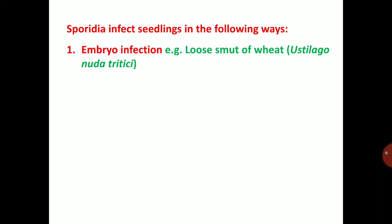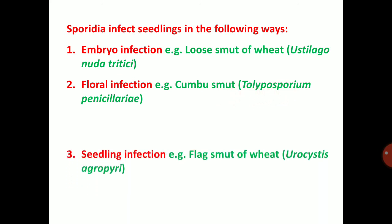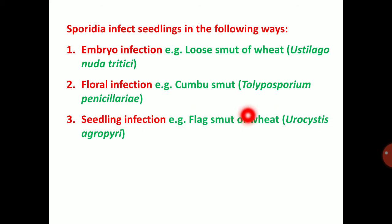Sporidia infect seedlings in the following ways. First, embryo infection — example: loose smut of wheat, Ustilago nuda tritici; it infects the embryo of the seed. Next type is floral infection — example: covered smut, Tolyposporium penicillariae, which infects the floral stage. Next, seedling infection — example: flag smut of wheat, Urocystis agropyri; it infects the seedling stage.